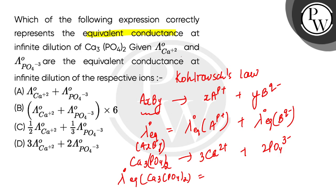The equivalent conductance of cation is Ca2+, lambda naught Ca2+, and anion has given it lambda naught PO43-.